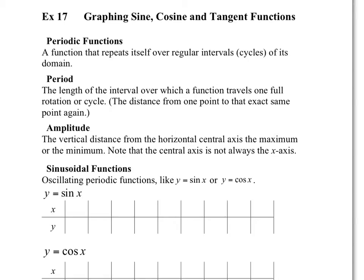The period is the length of the interval over which the function travels — one full rotation or cycle. You might have learned this in physics class. Using the same temperature context, the period would be one full year, because a year from now we're going to have the same average temperatures as we had today.